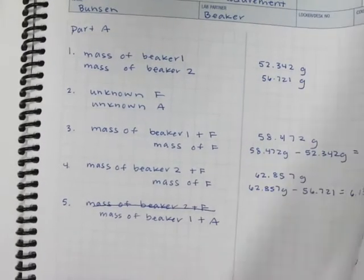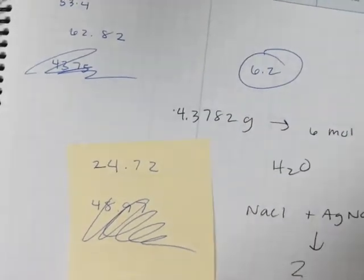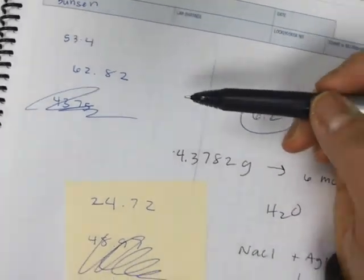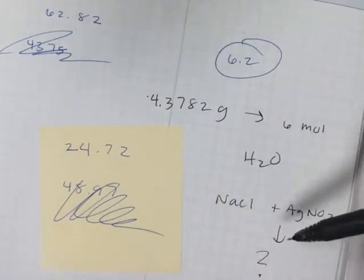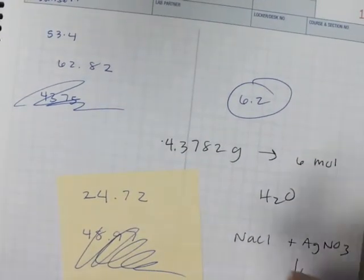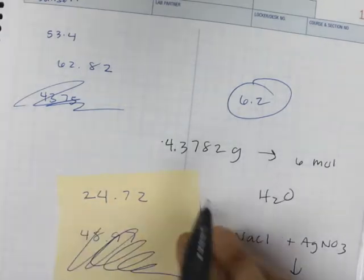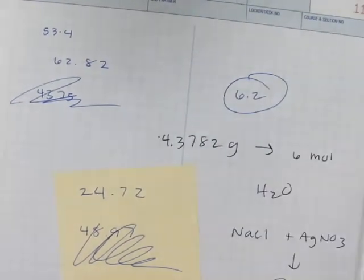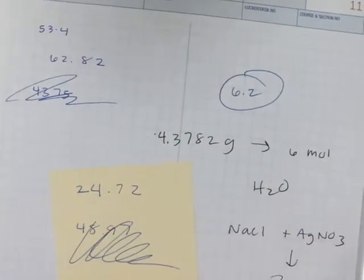One thing that you want to make sure that you do when you're making your notebook is you don't want random numbers floating around here and units and scribbles. This is a lab notebook, not a diary, so don't just scribble things. And you don't want post-it notes with data on them.